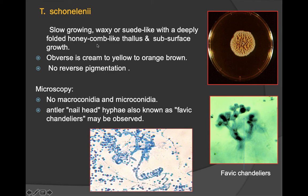Trichophyton schoenleinii are slow-growing with a waxy, pursed-like appearance and a deeply folded honeycomb-like thallus — cream or yellow-orange in color on the obverse, with no pigmentation on the reverse. Microscopy shows no macroconidia or microconidia, but antler/nail head appearance and favic chandelier structures are seen.